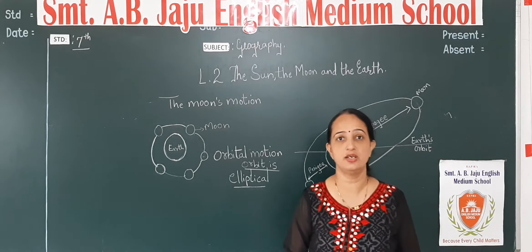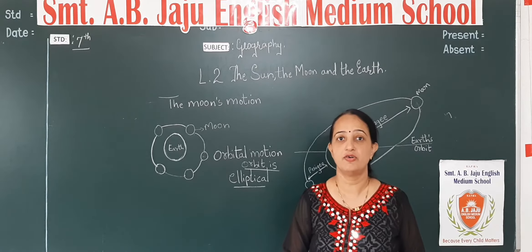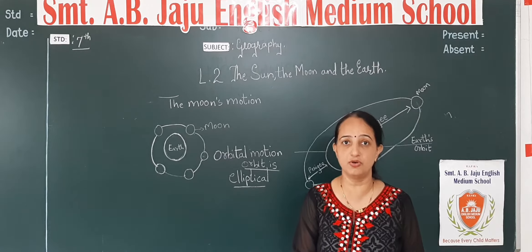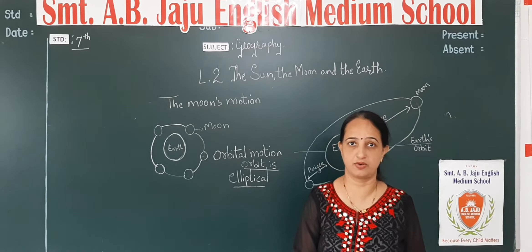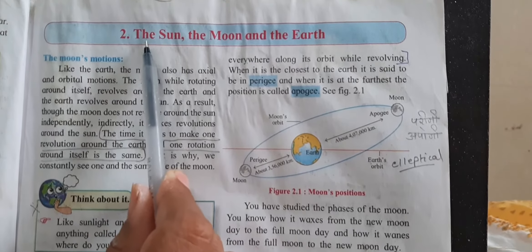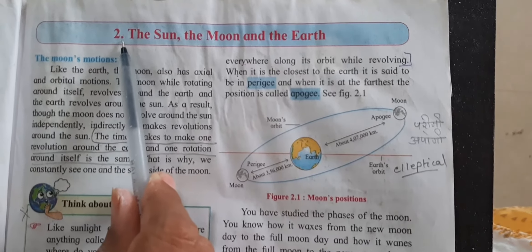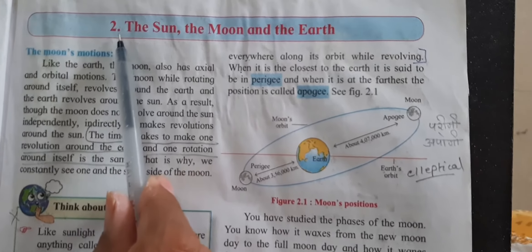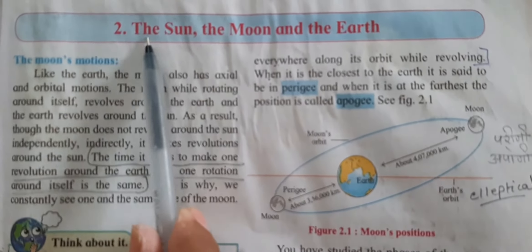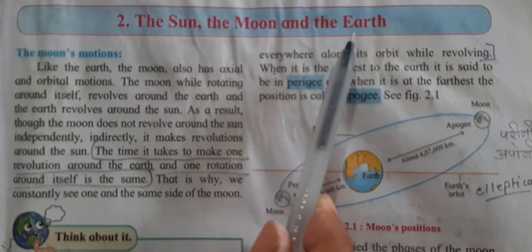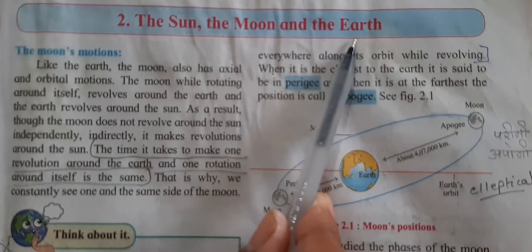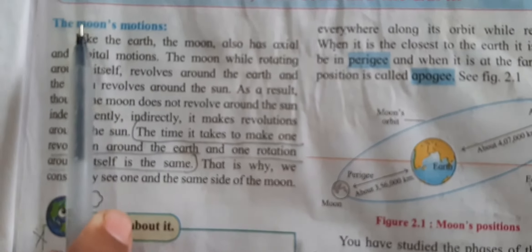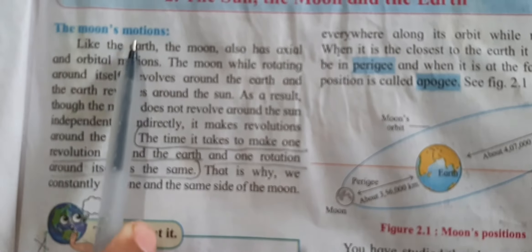Let's start with our lesson in our textbook. Open your textbook. See lesson number 2: The Sun, the Moon and the Earth. What we are going to see today is the moon's motion.